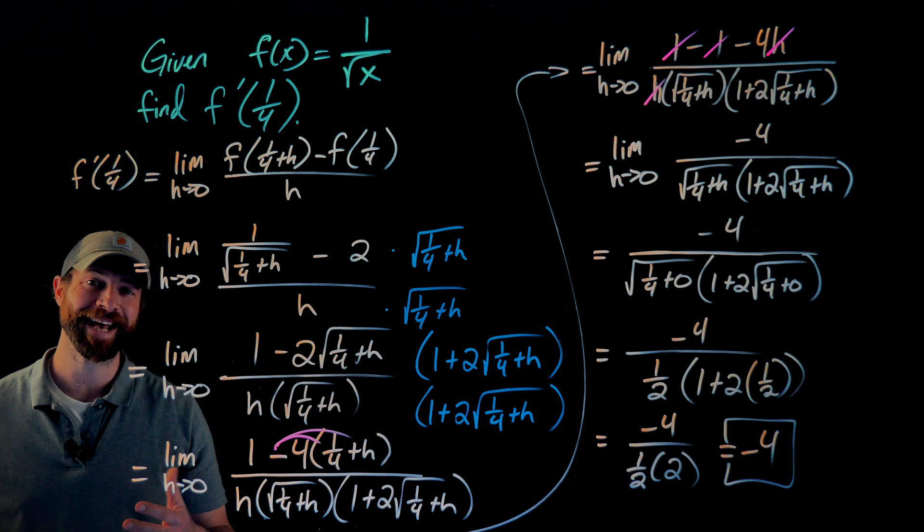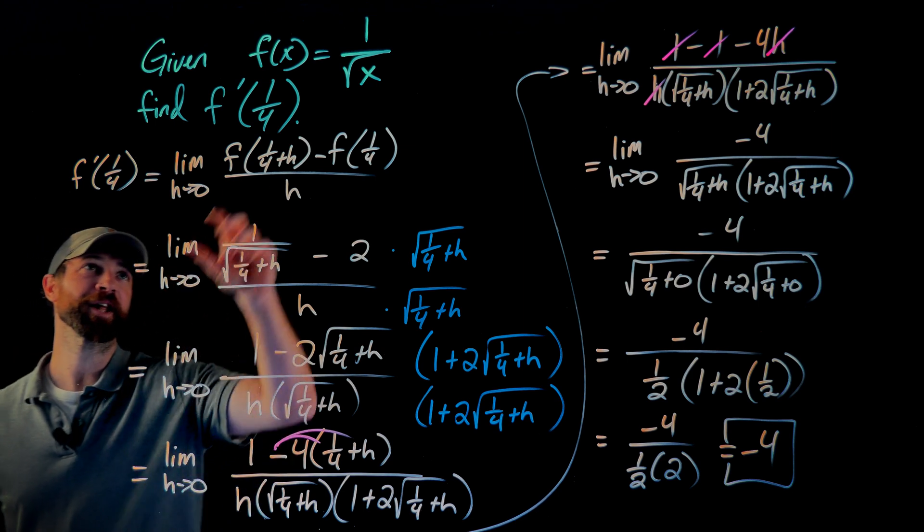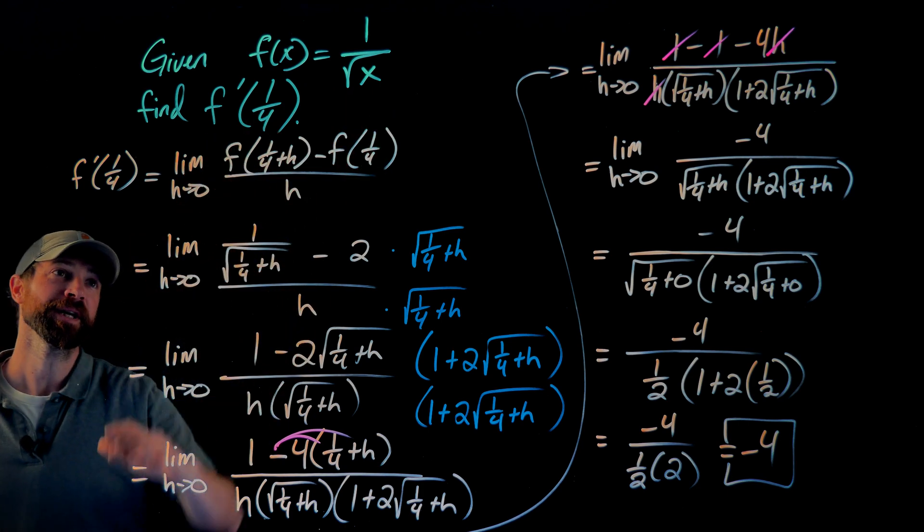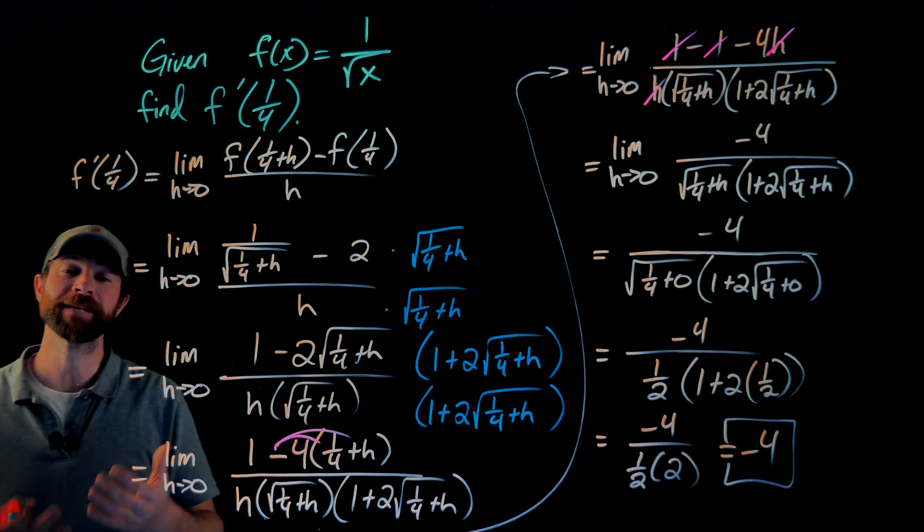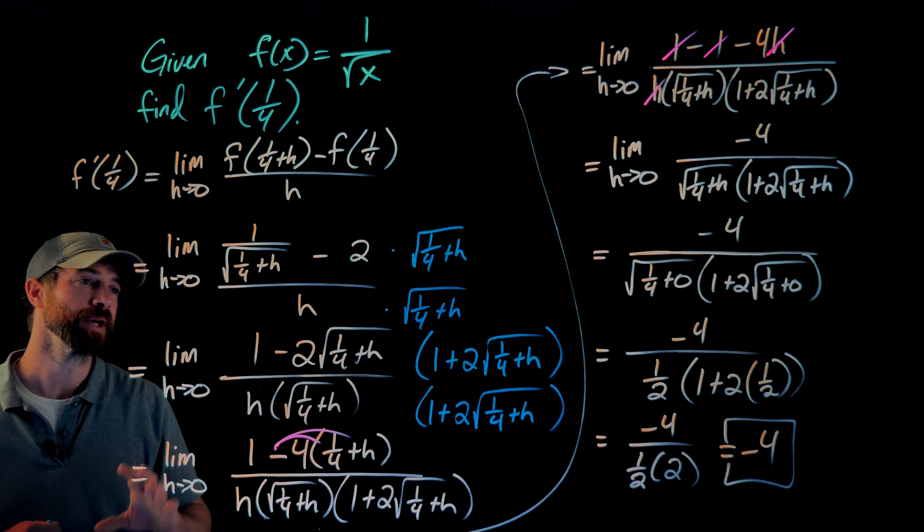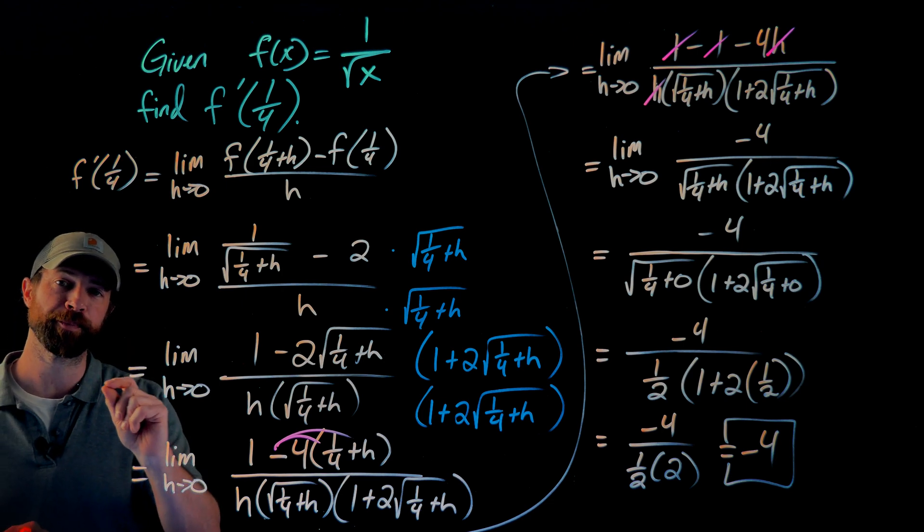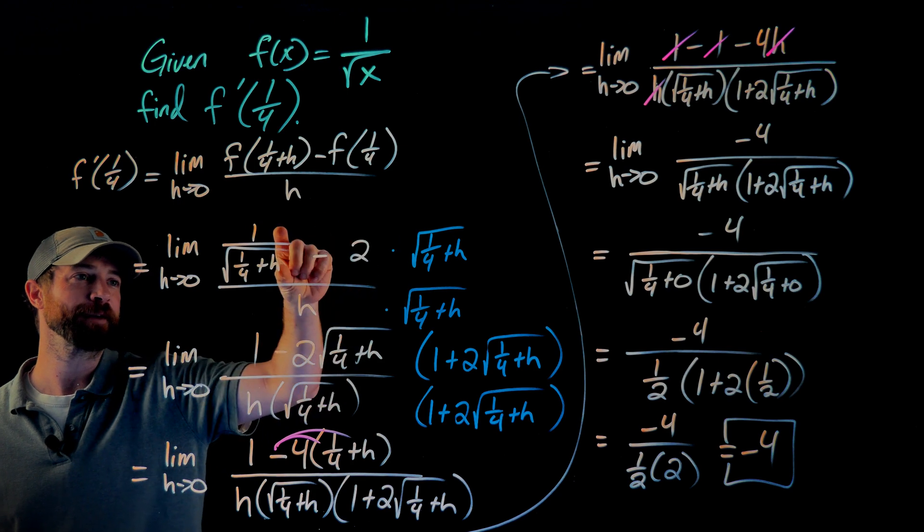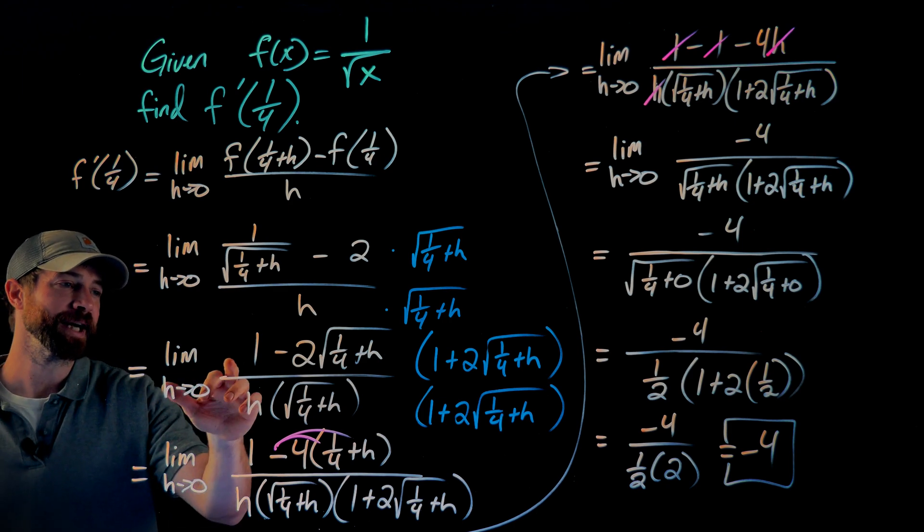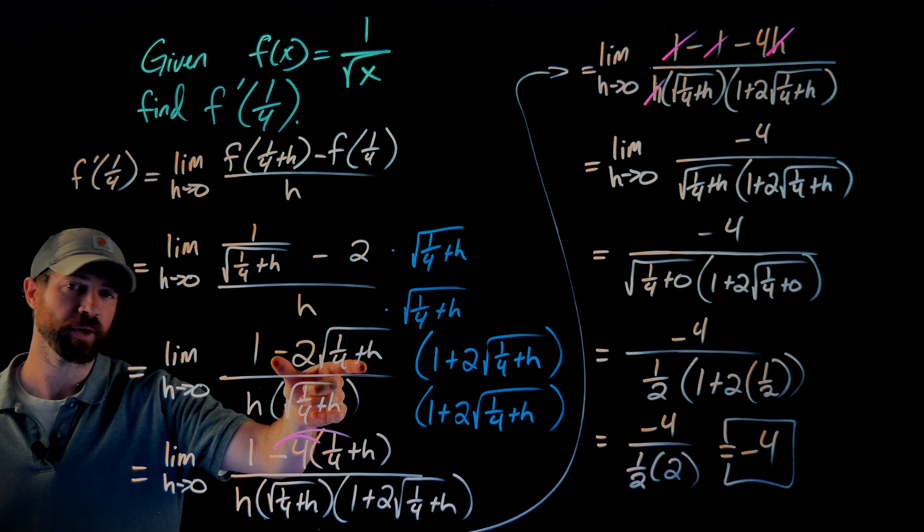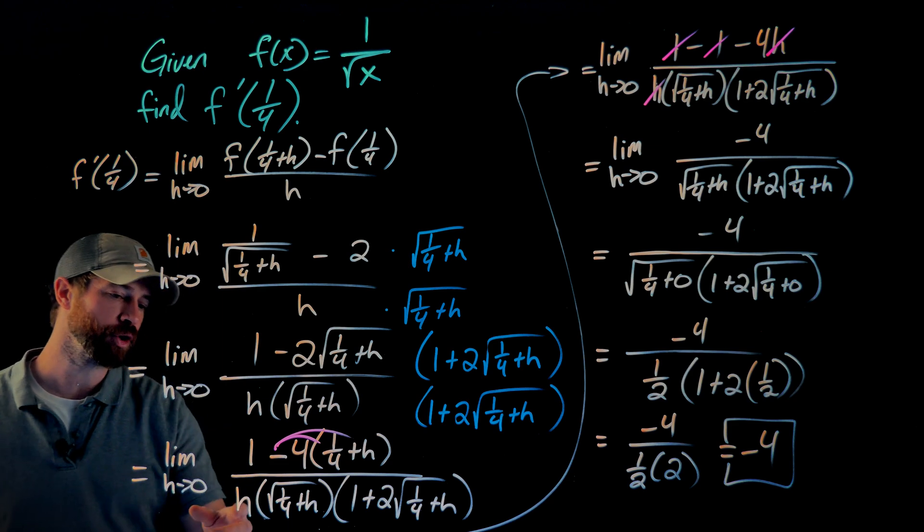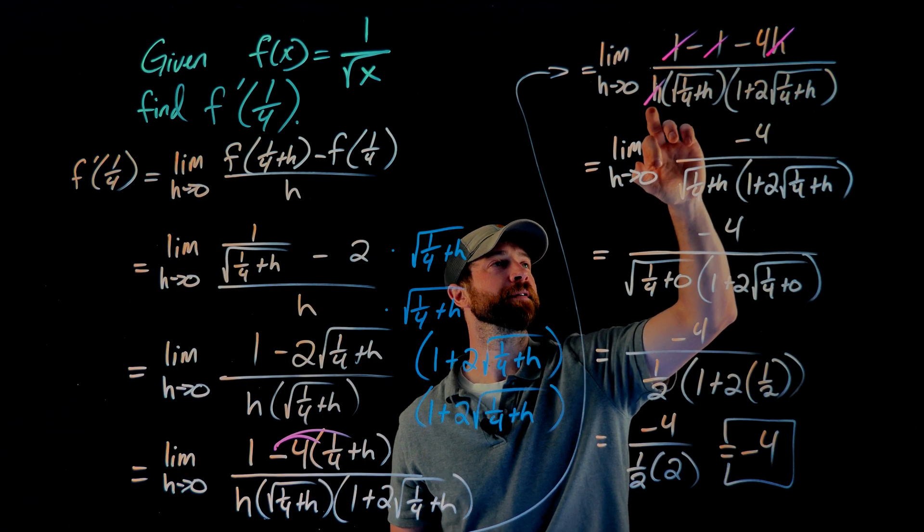That was a lot quickly, but I want to recap all the steps and what we were doing. We're evaluating the derivative of the function 1 over the square root of x at x equals 1/4. We plug that definition in here. This is a particularly difficult one because it's a rational, meaning a fractional expression or function, and it has the square root. Those two separate things were taken care of in two separate moves. First, I cleared the complex fraction, meaning the fraction inside of the bigger fraction, by multiplying by the LCD of the numerators here. After I did that, I then multiplied by the conjugate of the numerator. I'm doing that to get rid of this square root right here. If I do all that correctly, then I'll get to the point where I can cancel that common factor of h.